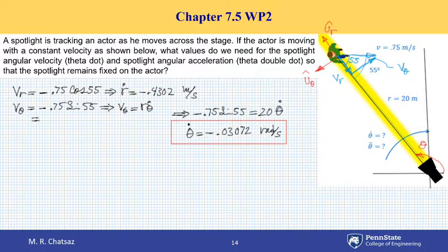The other unknown to be found is angular acceleration or theta double dot. Okay, so let's write the equation for theta double dot, or A sub theta. A sub theta contains theta double dot.